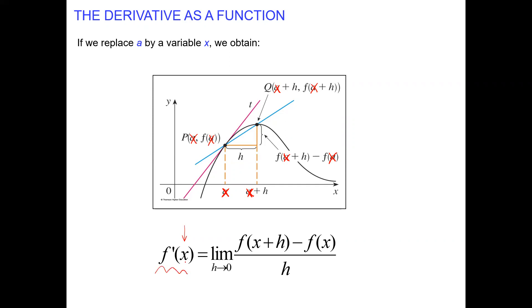F prime of x is the derivative of the function f in general. It's defined as a new function, because the answer — instead of having a constant number like x is 5, which gives a constant — if I say x is just a variable, we will get a new function, an expression in terms of x.